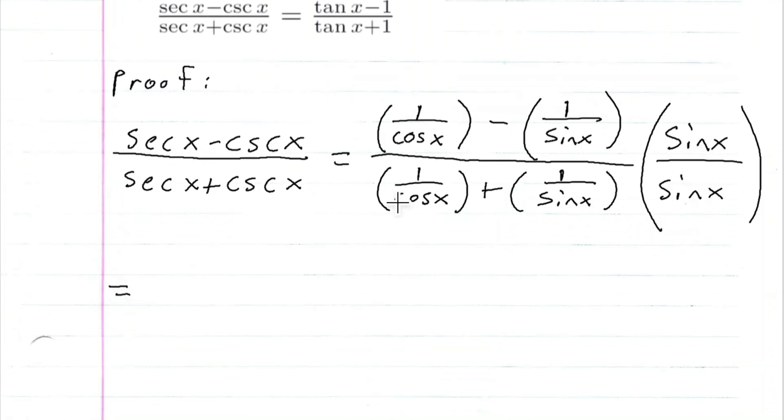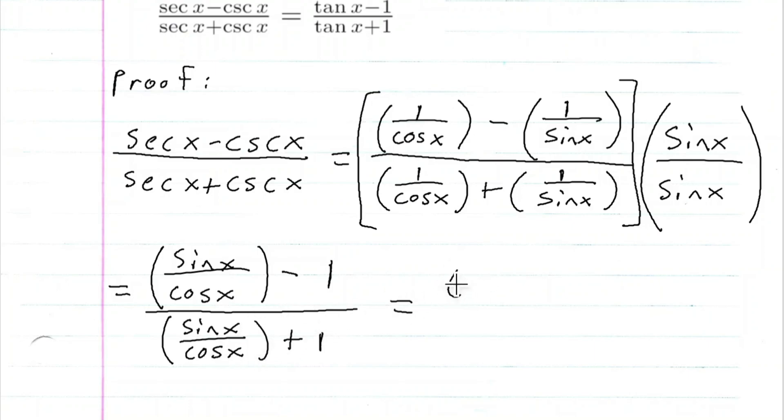So this is equal to, so sine x times, another thing, let's go ahead and put a parenthesis around this to indicate that I have to distribute. So sine x times 1 over cosine x is sine x over cosine x, and then this will be minus 1 over sine x over cosine x plus 1, which is equal to tangent